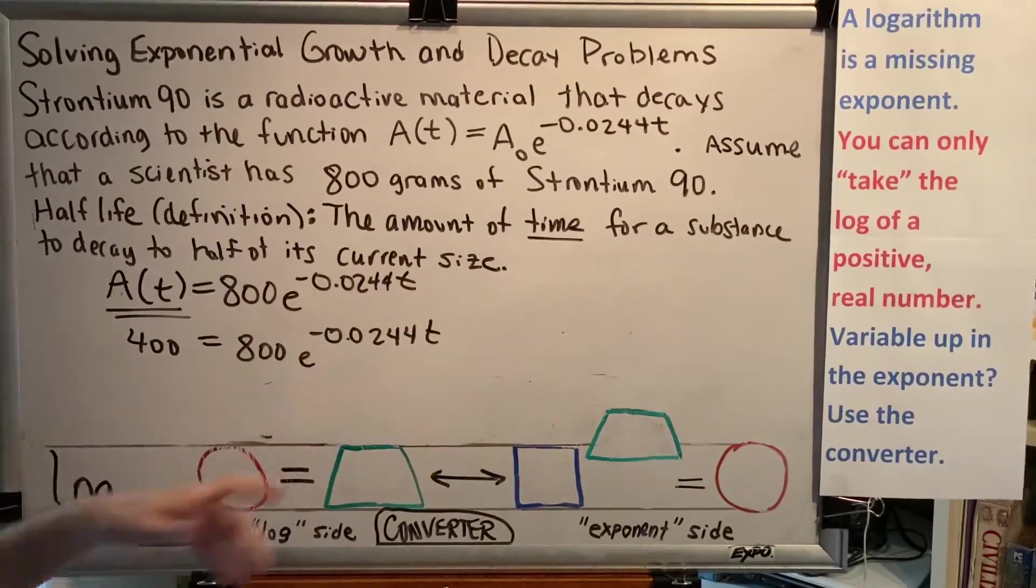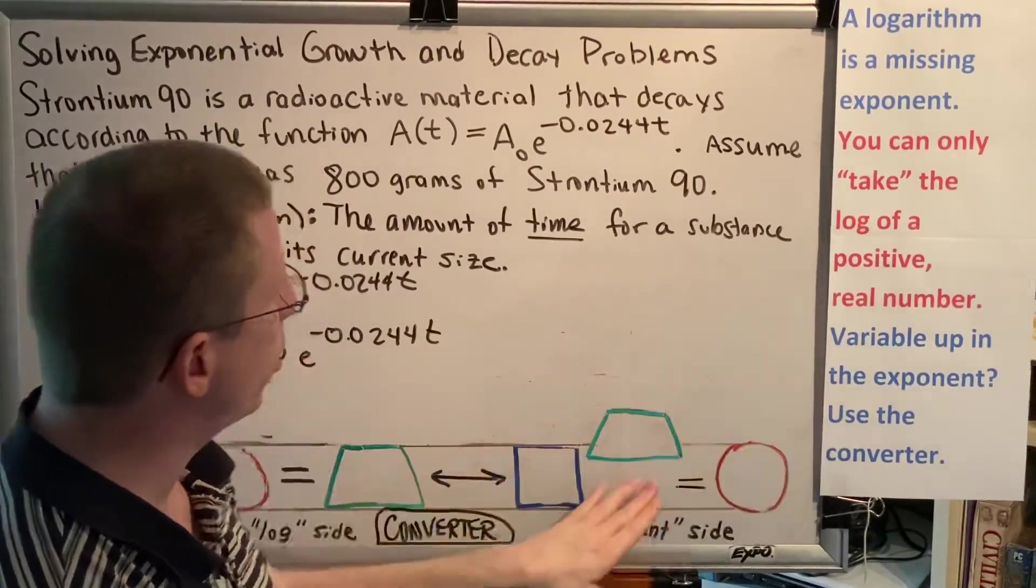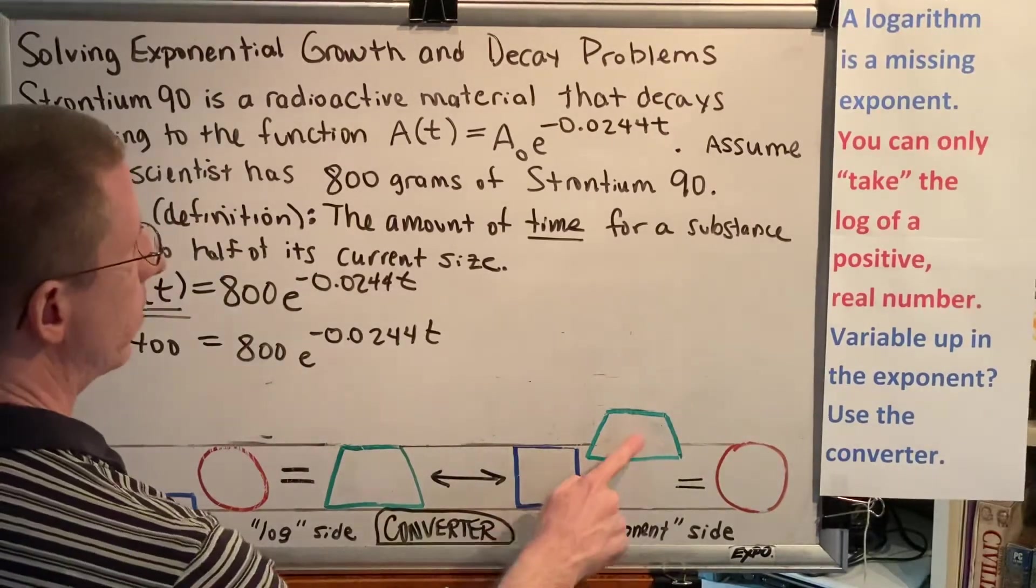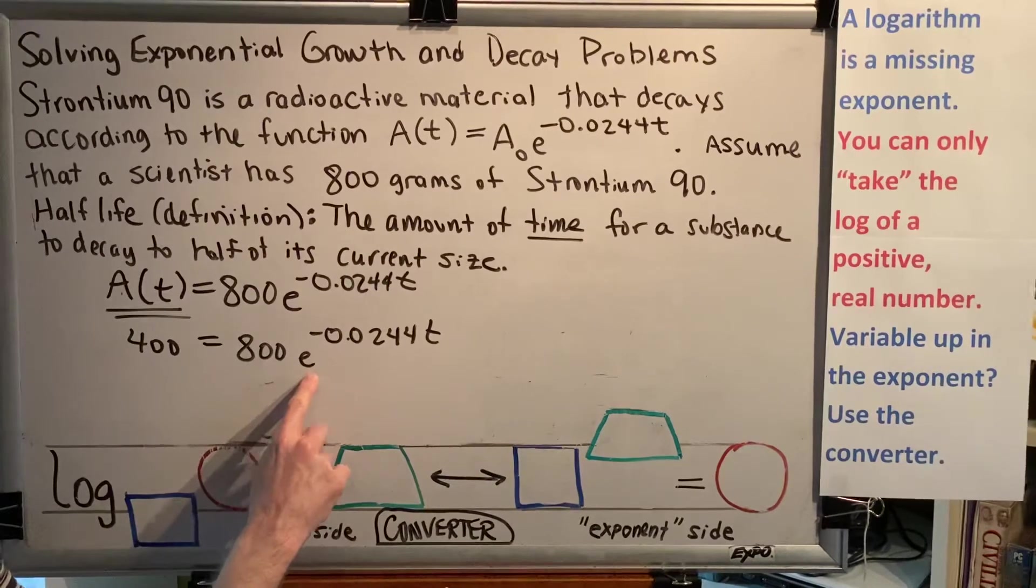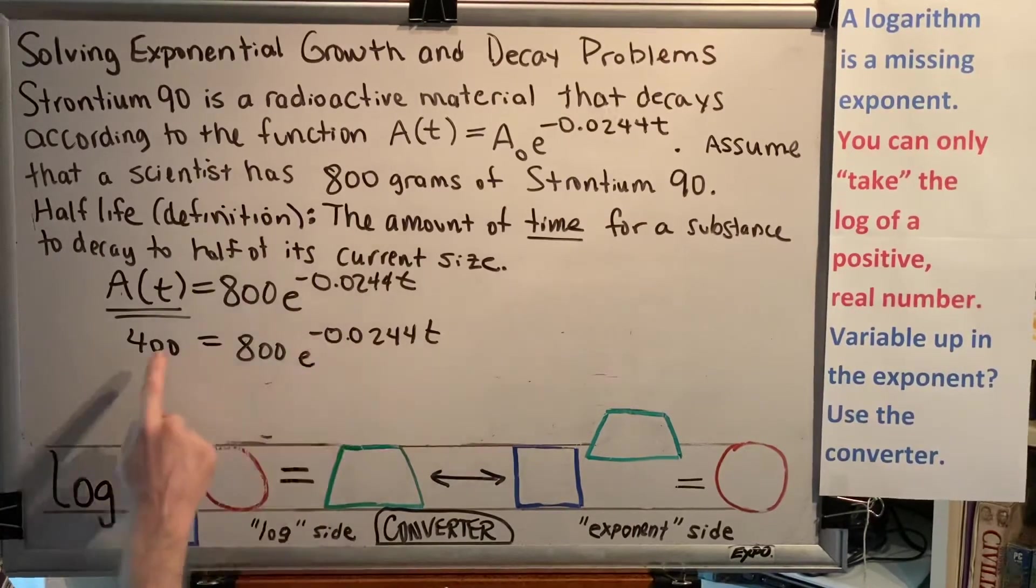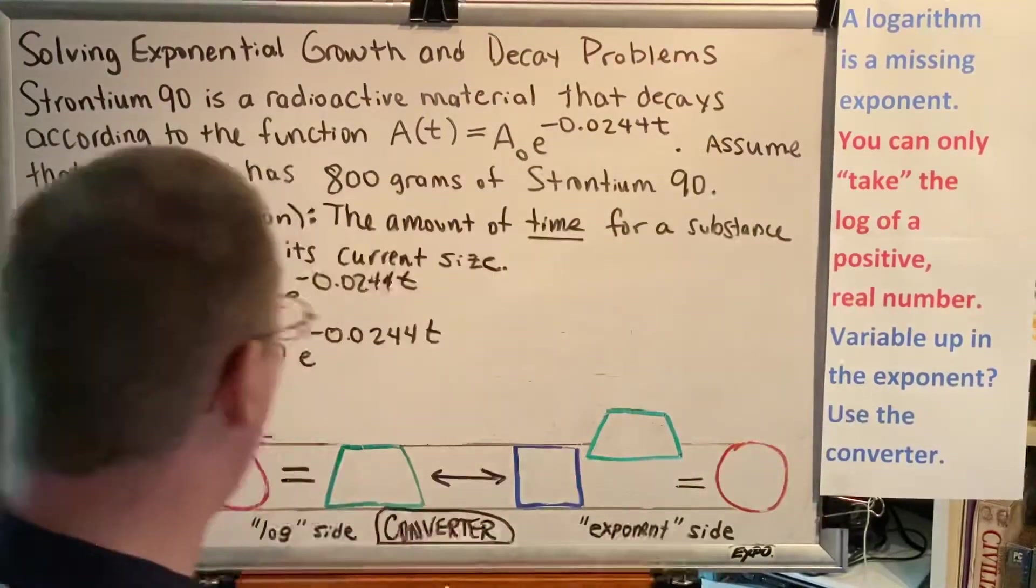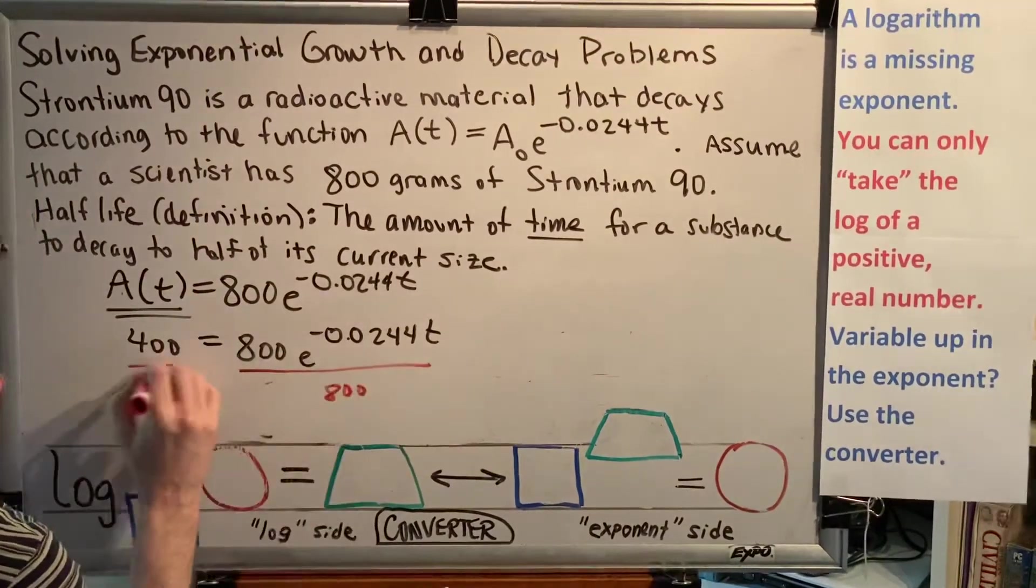All right, here we go. So we get 400 = 800e^(-0.0244t). We want to solve for t; t is up in the exponent. When what you're trying to solve for is up in the exponent, use the converter. But the converter only has space for three things: a base, an exponent, and an argument. In our problem, we have a base, which is e, an exponent, negative 0.0244t, and an argument, 400. There's nowhere for the 800 to go. So we can't use our converter until we get rid of the 800.